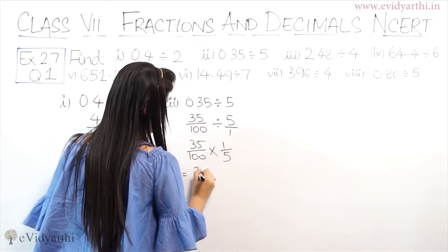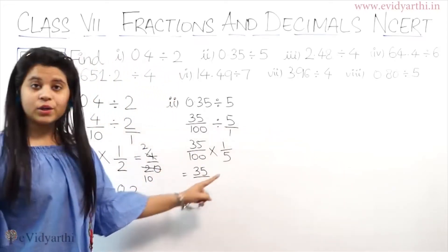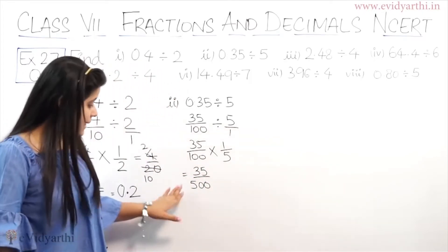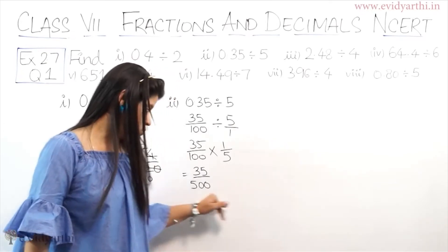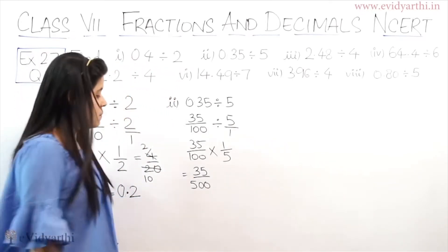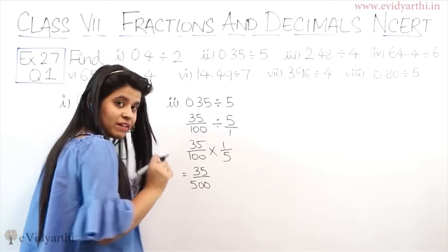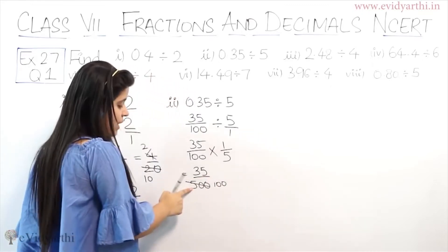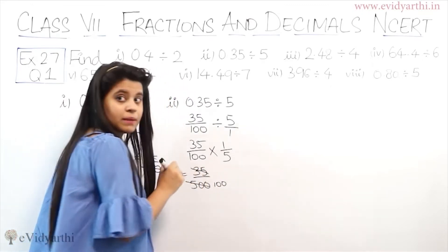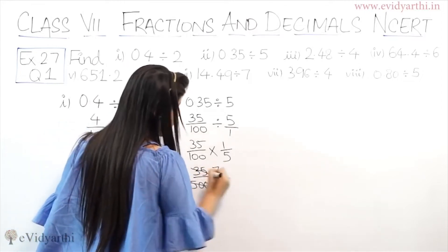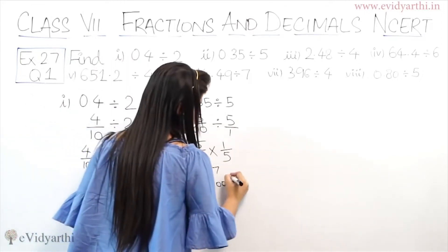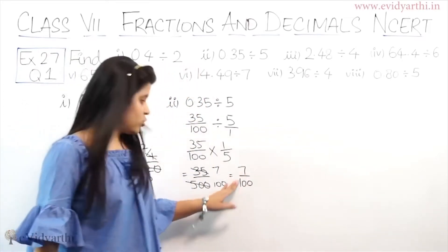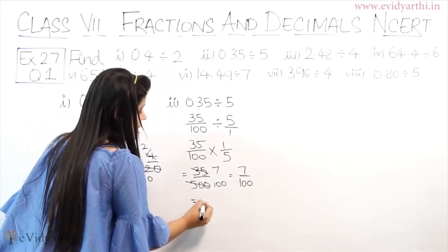So now this will be 35 into 1 is 35 and 100 into 5 is 500. Now I need to convert this such that below I have 10, 100, or 1000. So if we have 2 zeros then we will cut 100 and we will cut it from 5's table. So this will be 100 because 5 into 1 is 5 and 2 zeros. So 5's table is 35, 5 into 7. So this will be 7 upon 100.